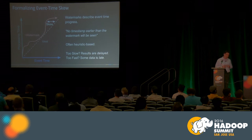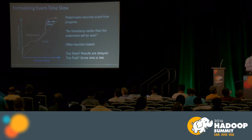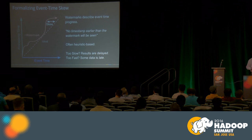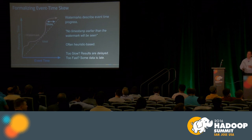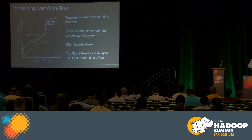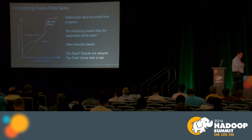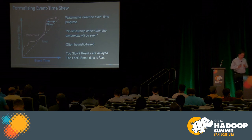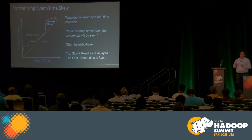This introduces the concept of a watermark. Watermarks describe progress in event time — when a watermark is at a certain point, we believe the system has processed all events that happened before it. We do not expect any more events older than the watermark. Of course, this is often heuristic-based. If the watermark is too slow, results will be delayed; if too fast, some data will be considered late. We can't avoid that, but we can handle it gracefully.